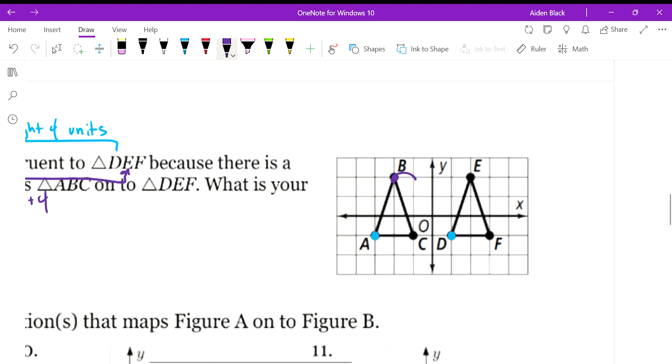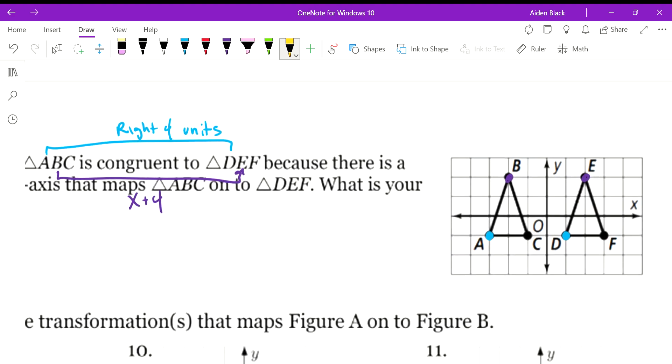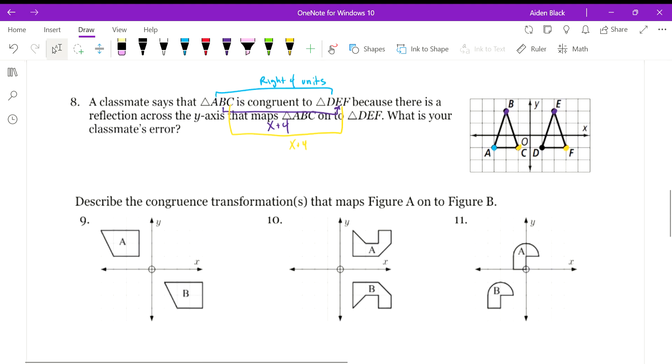So this should also be 4. So we go 1, 2, 3, 4. Oh, nice. B does map onto E. And then C should map onto F going just 4 units to the right. So C, we go 1, 2, 3, 4. Oh, there we go. Perfect. So it's actually a transformation to the right.